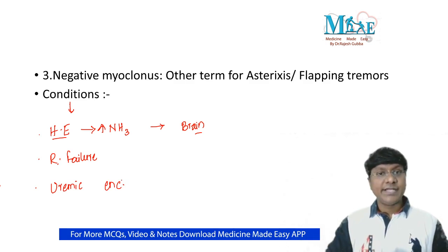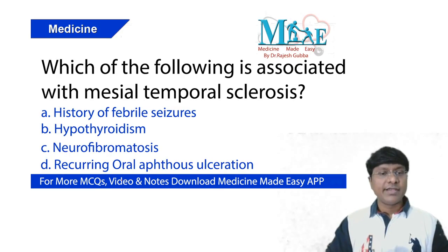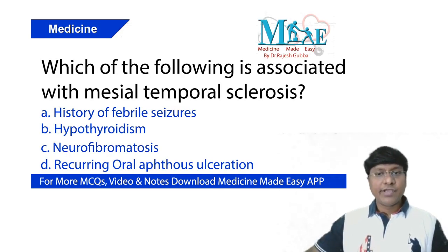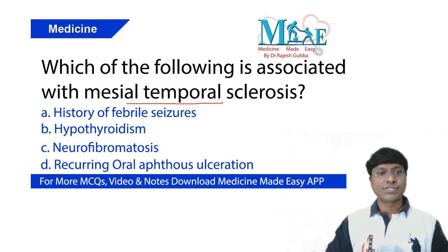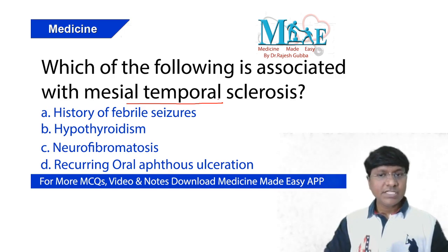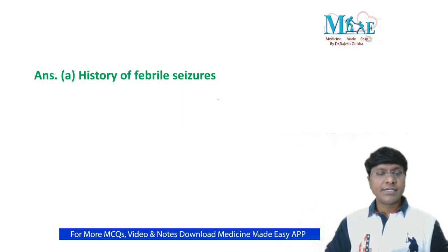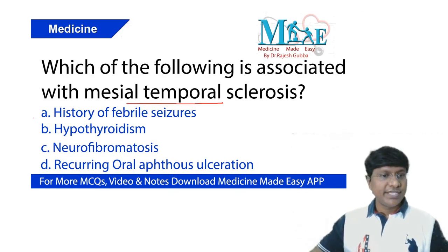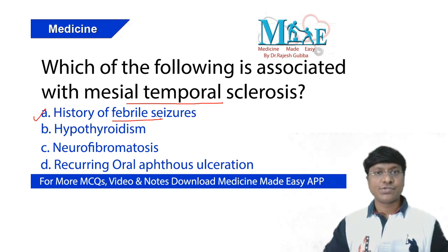As part of today's daily dose, another clinical question: which of the following is associated with mesial temporal lobe sclerosis? History of febrile seizures, hypothyroidism, neurofibromatosis, or recurring oral ulceration? The answer is history of febrile seizures, which is associated with mesial temporal lobe sclerosis.